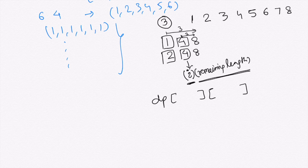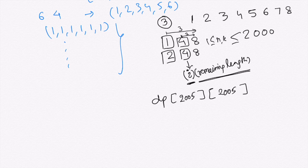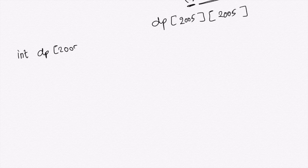The question states that both n and k have limits from 1 to 2000. So we will create a 2D memoization array of size 2005 x 2005. Unlike previous scenarios where we were maximizing or minimizing, here we have to count the total number of good sequences. Let's start by writing the function: `int dp[2005][2005]` and a function called `int solve`.